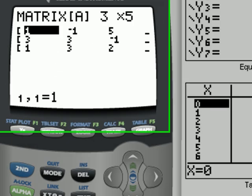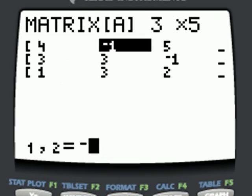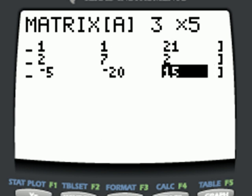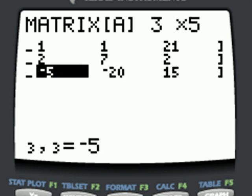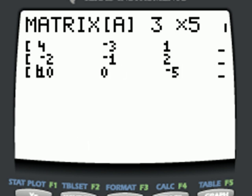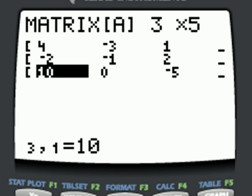And then enter our elements. So I went ahead and entered the matrix in. Let's go ahead and check it to make sure it's correct. Again, we have three rows, five columns.